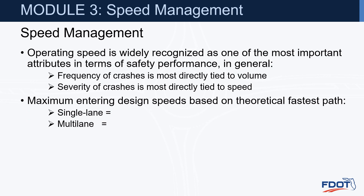Operating speed is widely recognized as one of the most important attributes in terms of safety performance. In general, the frequency of crashes is most directly tied to volume — the more traffic going through an intersection, the more likely there are to be more crashes. But the severity of crashes is most directly tied to speed, and therefore why we are looking to reduce speeds as we approach roundabouts.